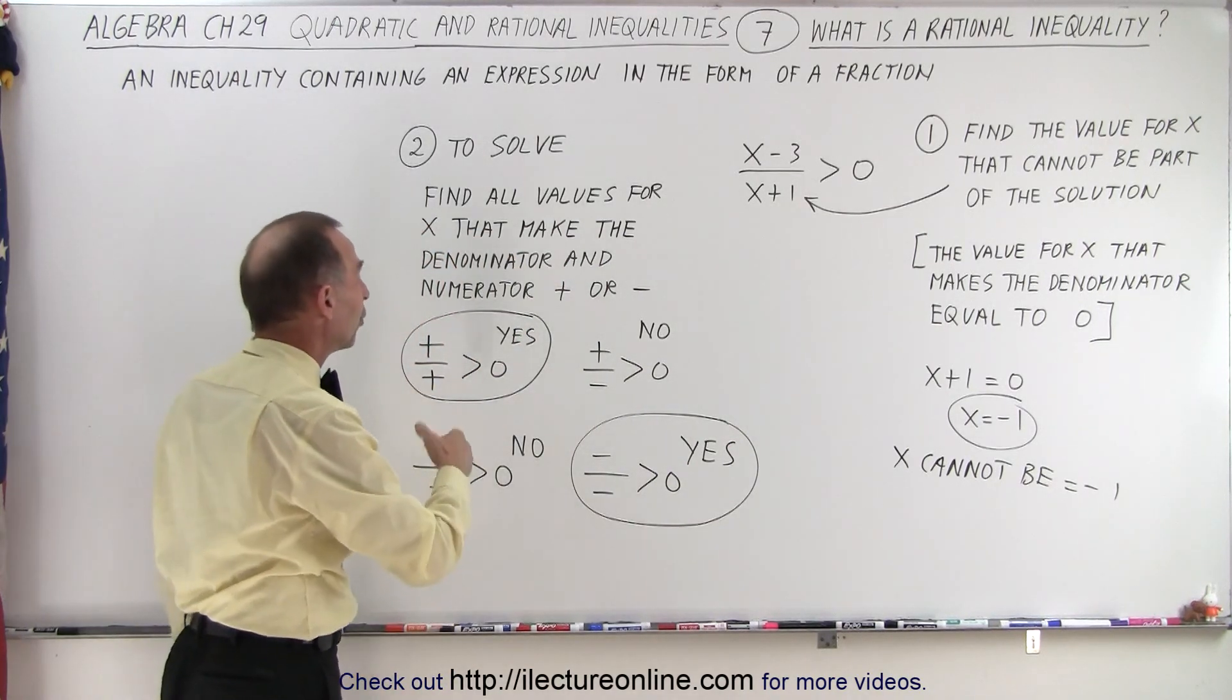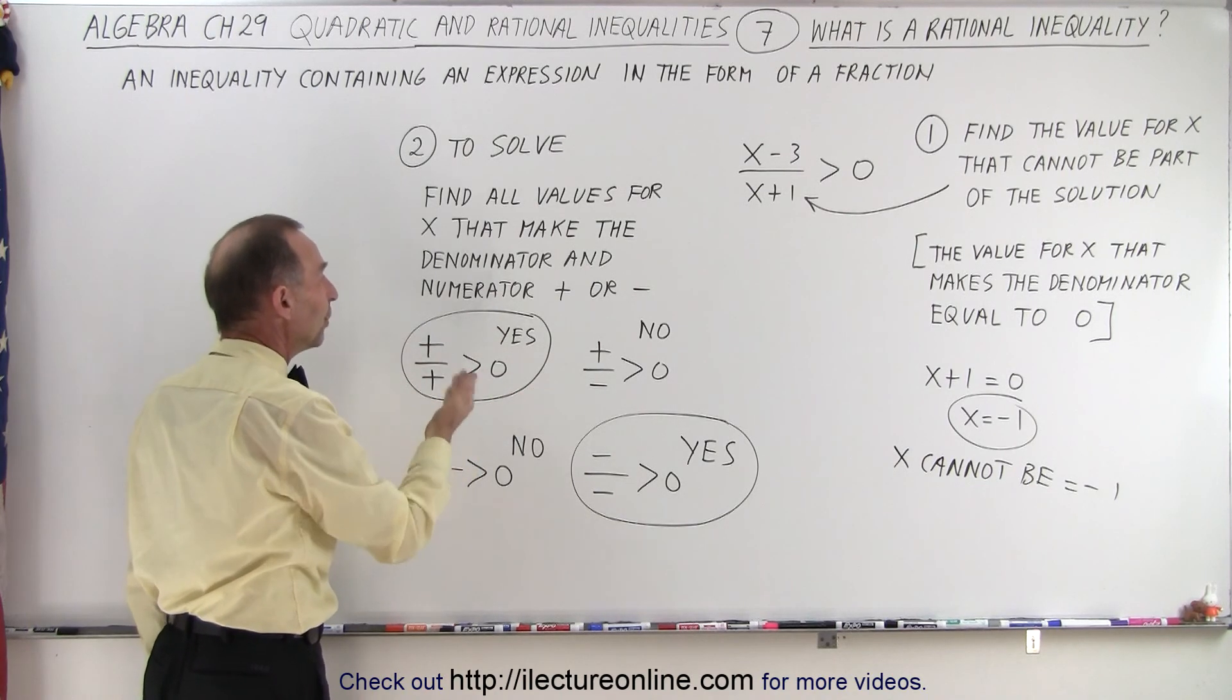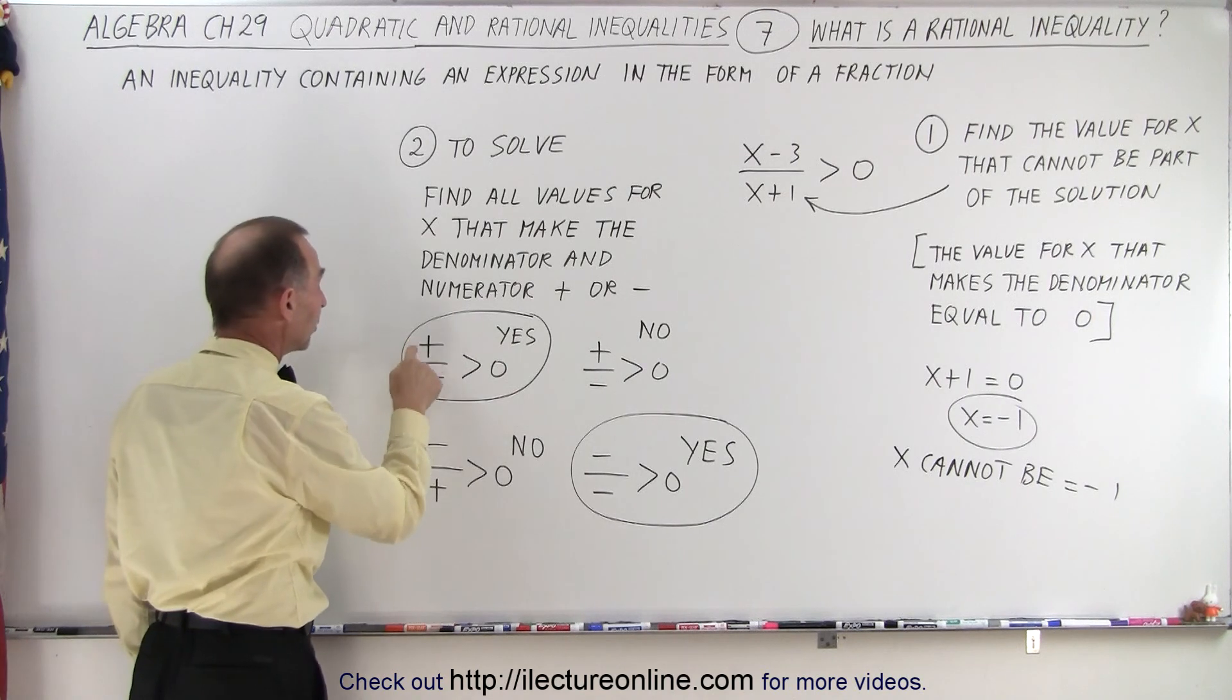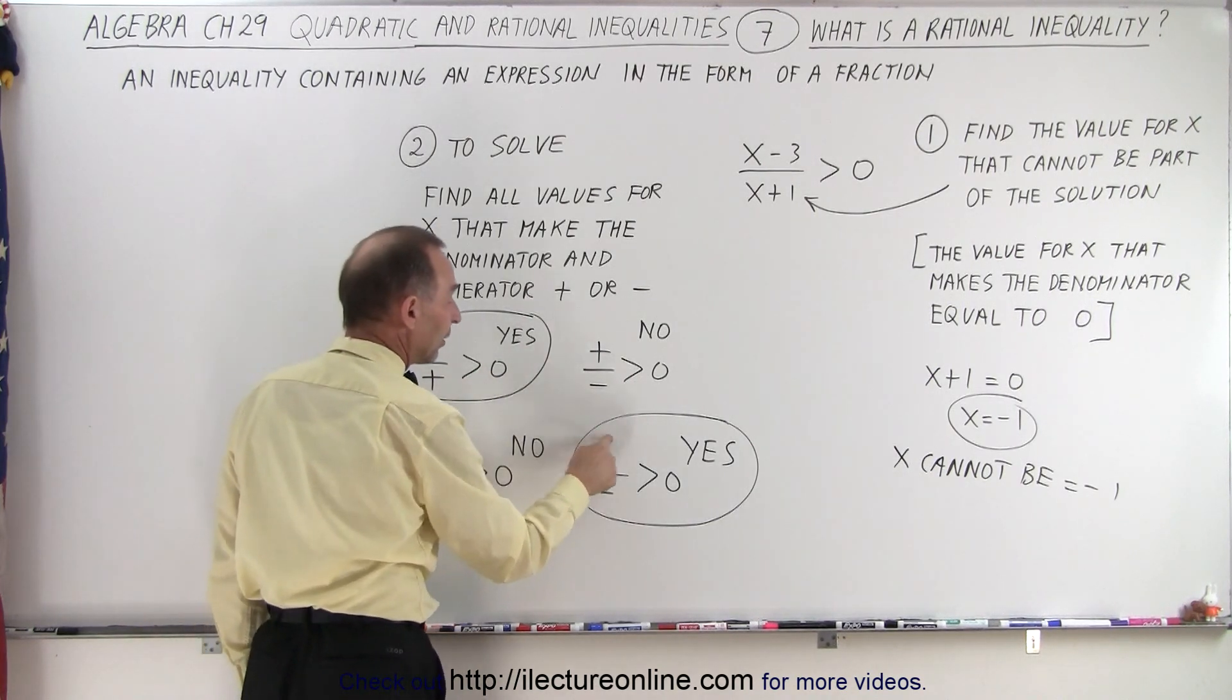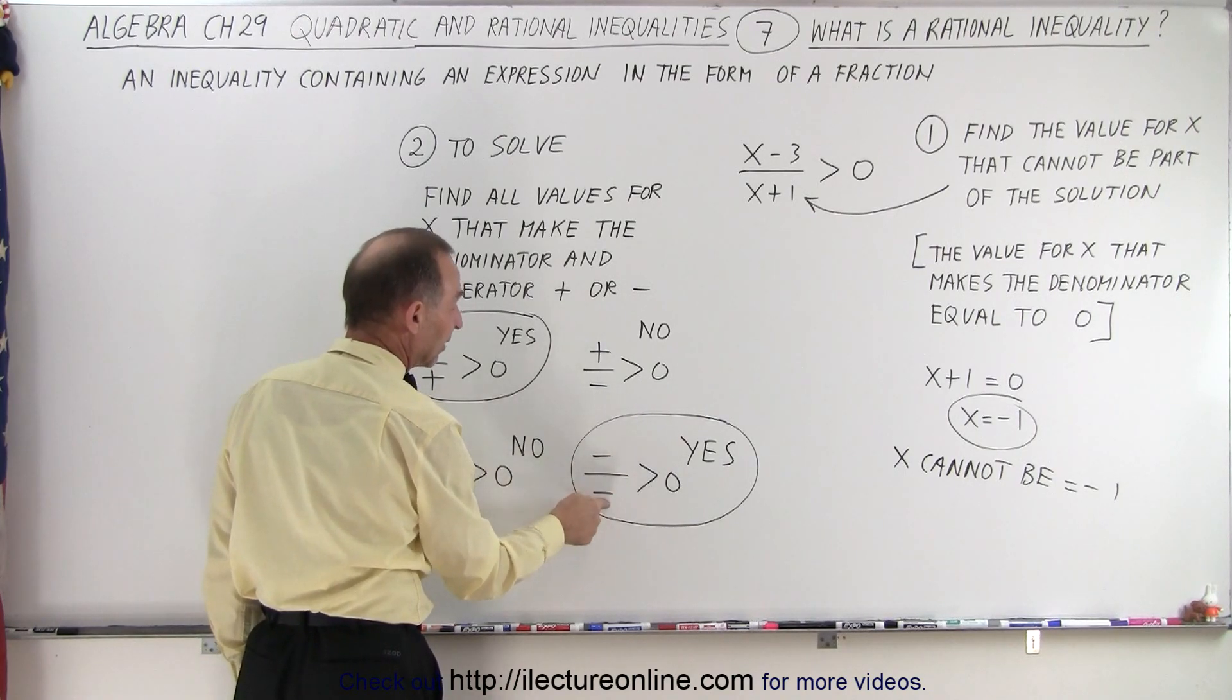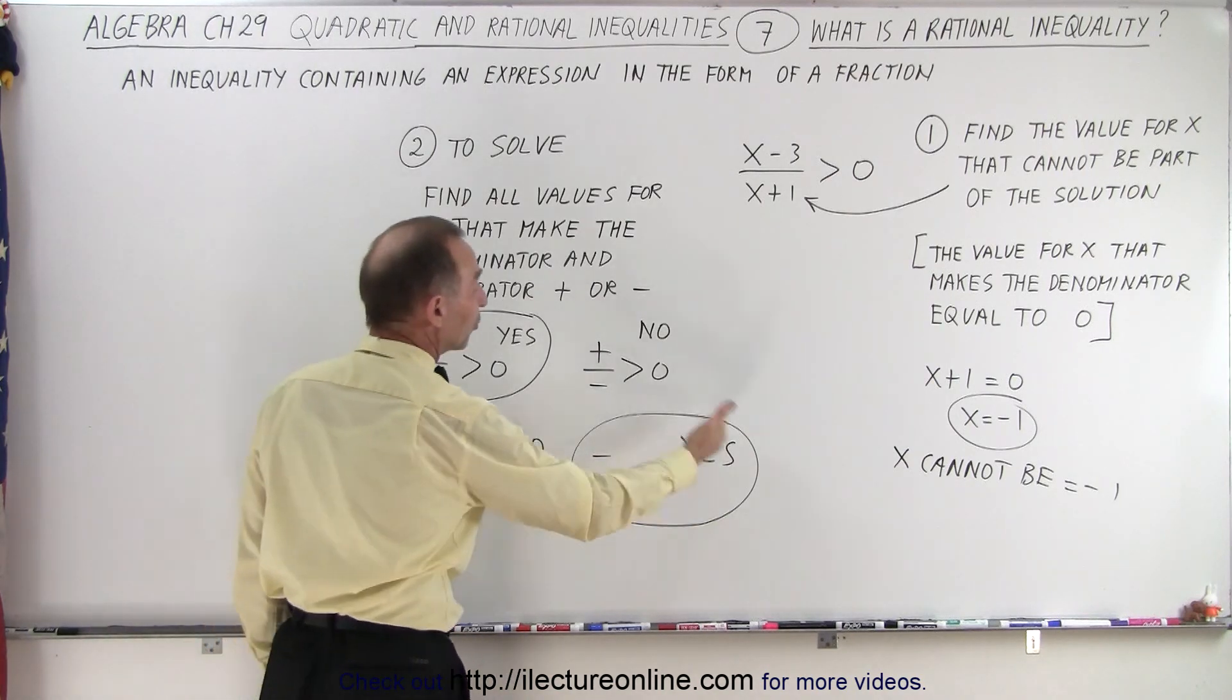So we're going to take the approach where we find all the values for x that make the denominator and the numerator either positive or negative. When both the numerator and denominator are positive, I'll end up with a positive value, and therefore that's greater than 0, so that offers up a solution. Also, when both the numerator and the denominator are negative, when I divide a negative number by a negative number, I get a positive number, which is greater than 0, so I also have a solution.